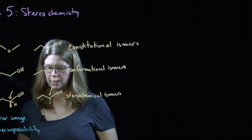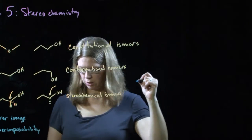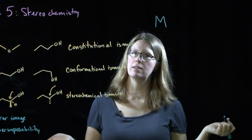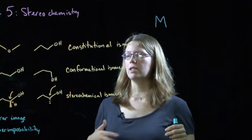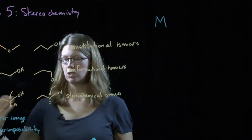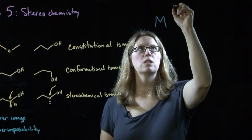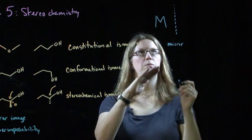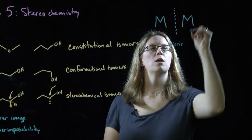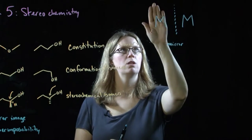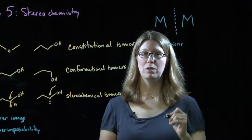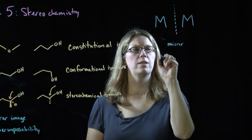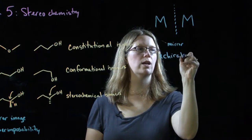We can look at a couple of different examples, on your notes on page 52. If you start by thinking about the letter M and asking whether it has some kind of stereochemical isomer, we draw a dashed line to indicate a mirror. The mirror image of M copied right over is superimposable. Because the mirror image is superimposable, this molecule is achiral — it has no chirality.